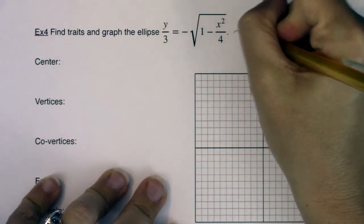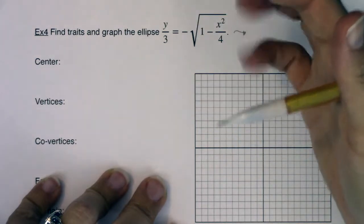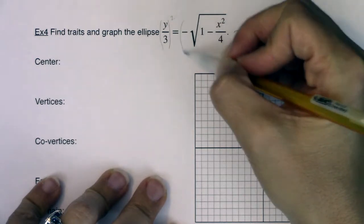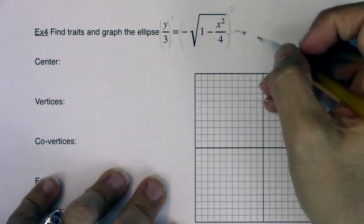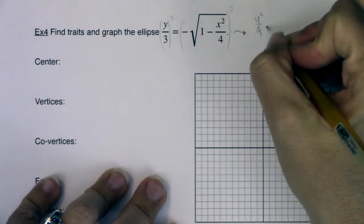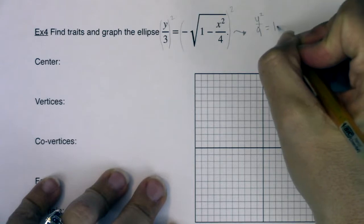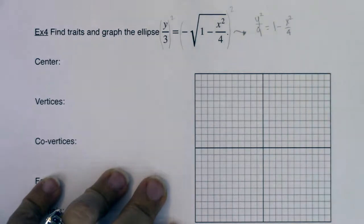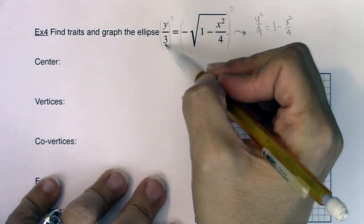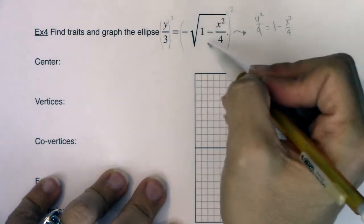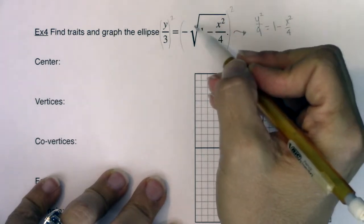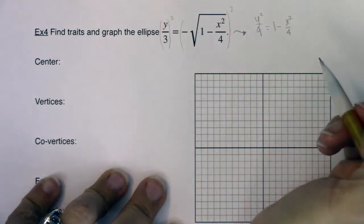So if I want to manipulate this a little bit to get it to look more like something we've seen before, let's square both sides. If I square both sides of this equation, I'm looking at y squared over 9 being equal to 1 minus x squared over 4. I say that because you can distribute this power or this exponent to the y and the 3. And when you square a square root, those two are going to go away. They're inverse operations of each other and negative 1 squared is positive 1.